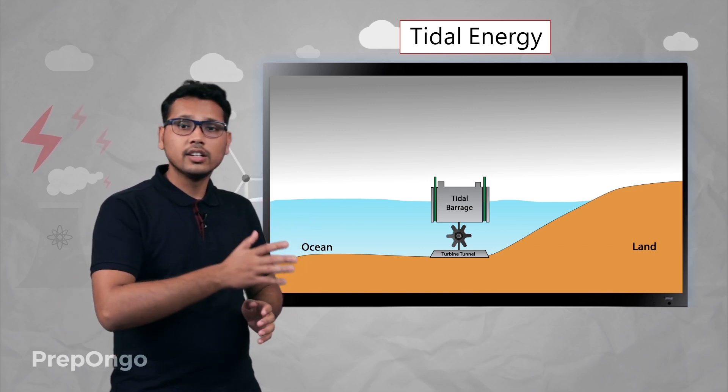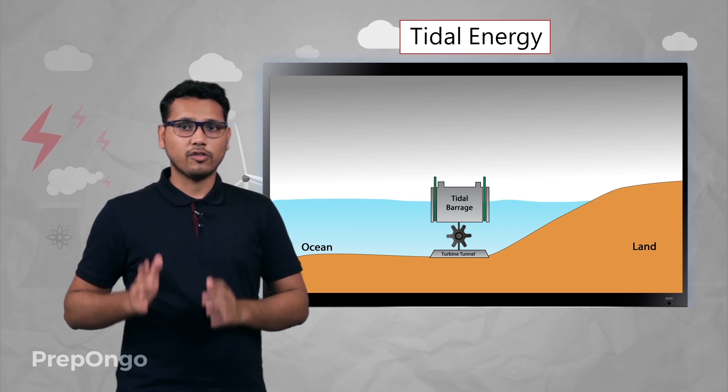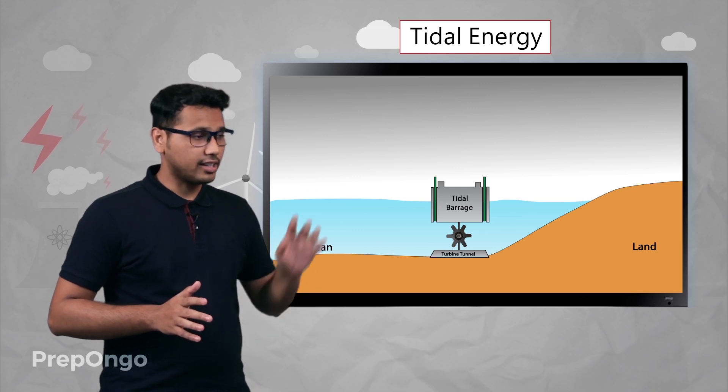When the water levels are equal on both sides, the gates are again closed.